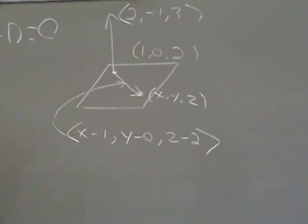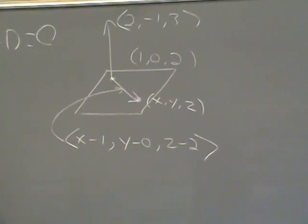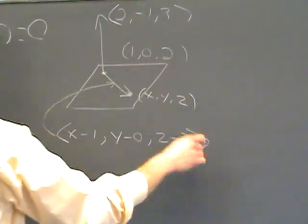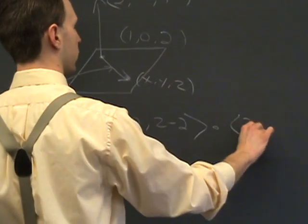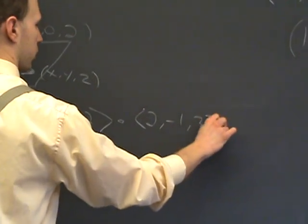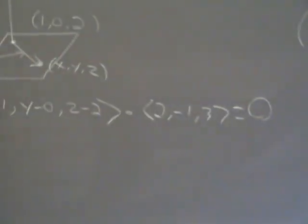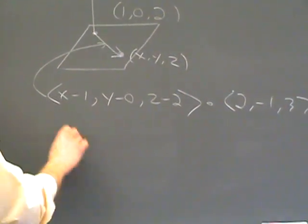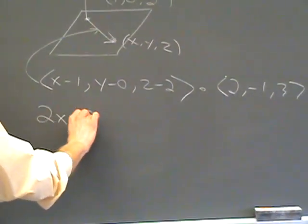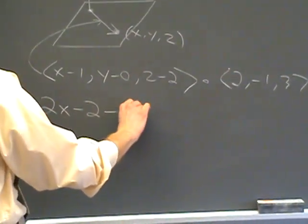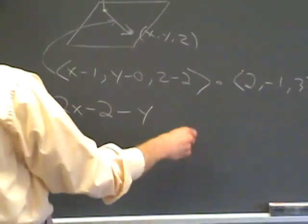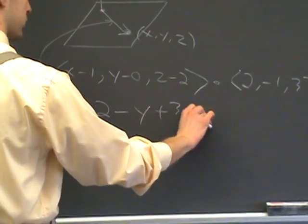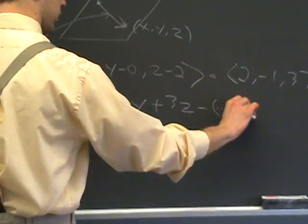And all those points X, Y, Z, when you dot them with (2, -1, 3) will give you zero. And all you have to do is multiply it all out. So what do we get? We'll get 2X minus 2 minus Y plus 3Z minus 6 equals zero.